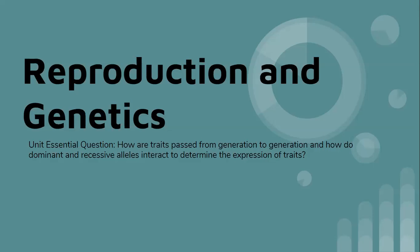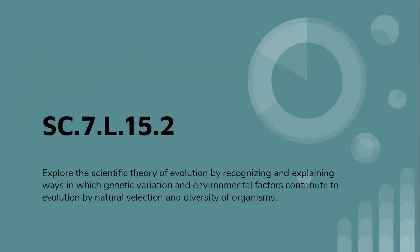We're also going to be doing SEEpals prompts. I'll post a link on Edmodo, and everything you need for every single day will also be on Edmodo — make sure you check that every morning. We are going to be talking about reproduction and genetics. Our unit essential question is: how are traits passed down from generation to generation, and how do dominant and recessive alleles interact to determine the expression of these traits?